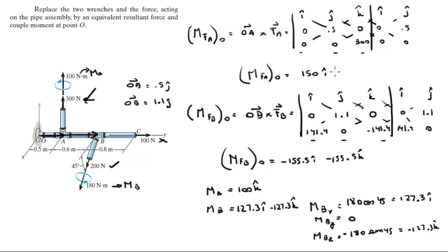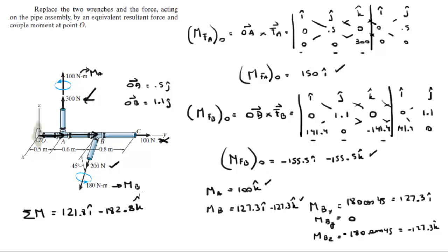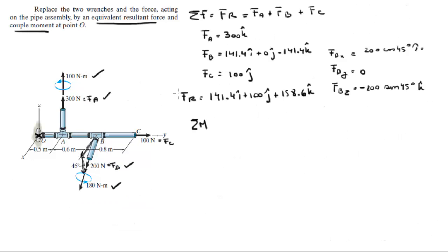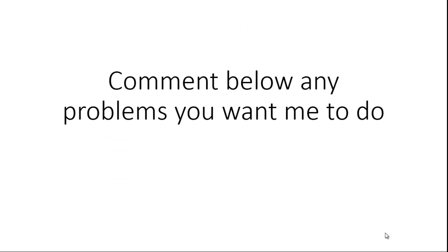Now we have all four moments. The 100 N force creates no moment. Summing all moments — adding i's with i's, j's with j's, and k's with k's — gives the equivalent couple moment: 121.8i − 182.8k, with no j component. Final answer: resultant force F_R = 141.4i + 100j + 158.6k, and couple moment = 121.8i − 182.8k. Please comment below if you want me to do any problems!